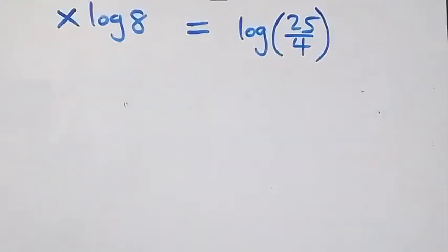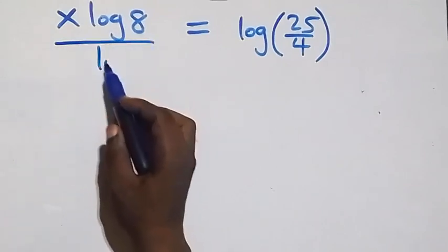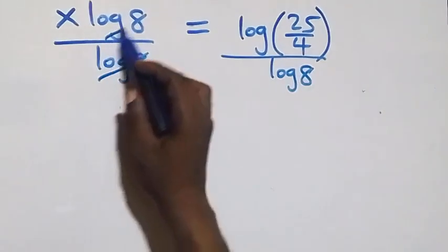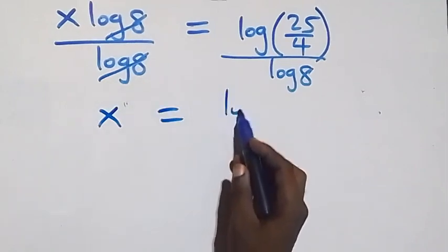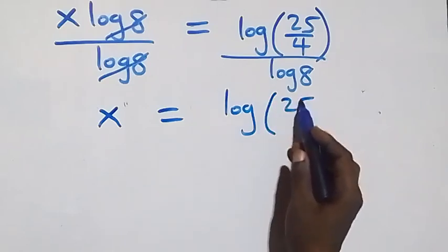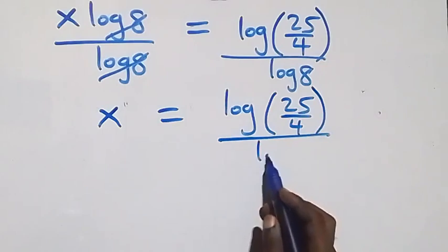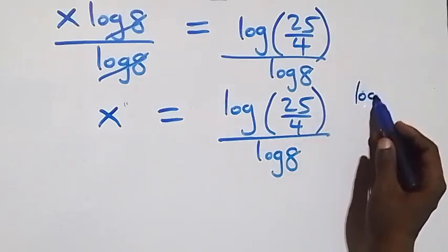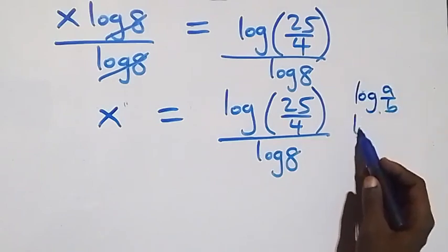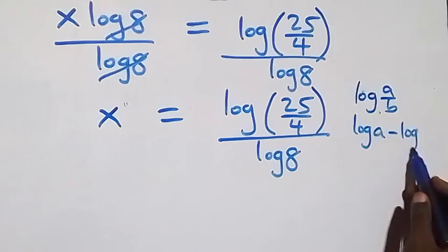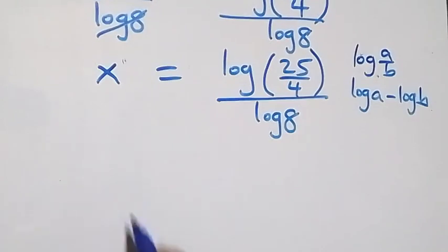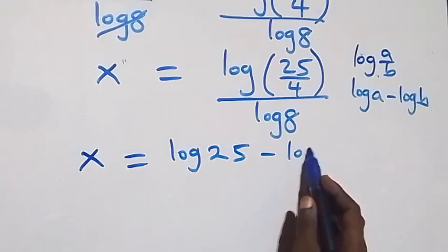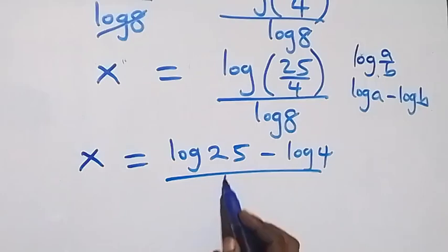We divide both sides by log 8, giving x equals log(25/4) divided by log 8. Then we apply the quotient rule of logarithms — log(a/b) equals log a minus log b — so x equals log 25 minus log 4, all over log 8.